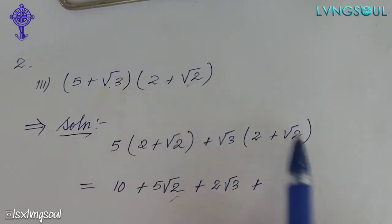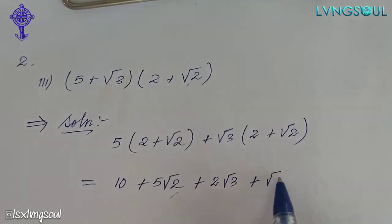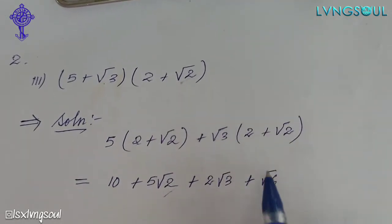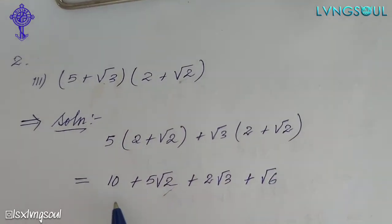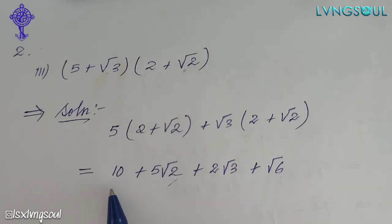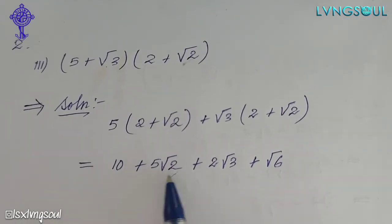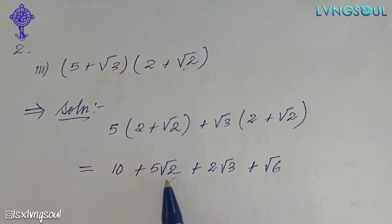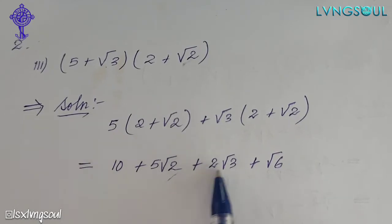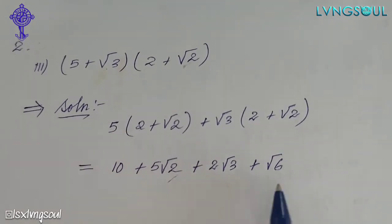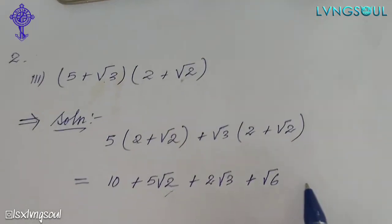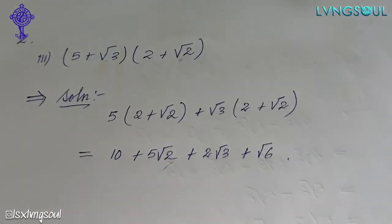Root 3 into root 2 is root 6. So root 3 into root 2 gives root 6. If you have real numbers, it's a natural number. 5 root 2 is an irrational number. So irrational number: 2 root 3. Root 6 is 2 into 3. So it's the solution.